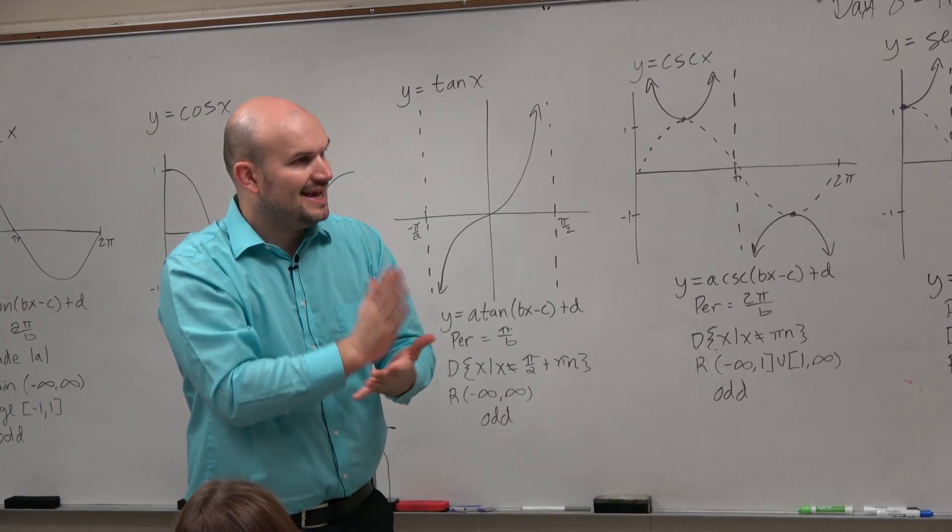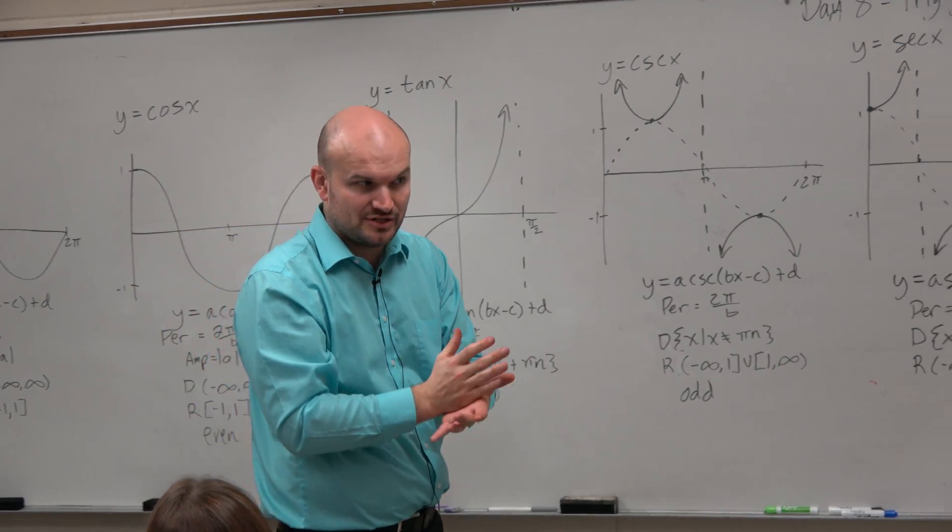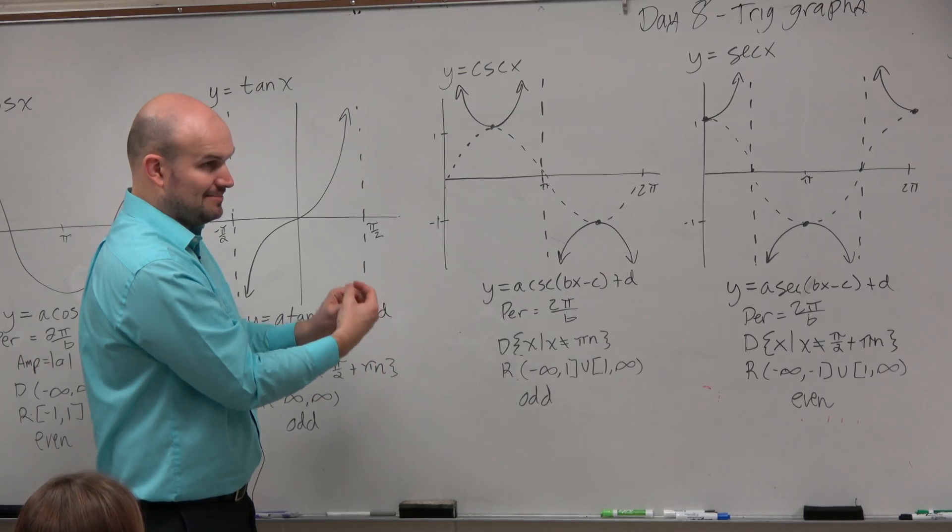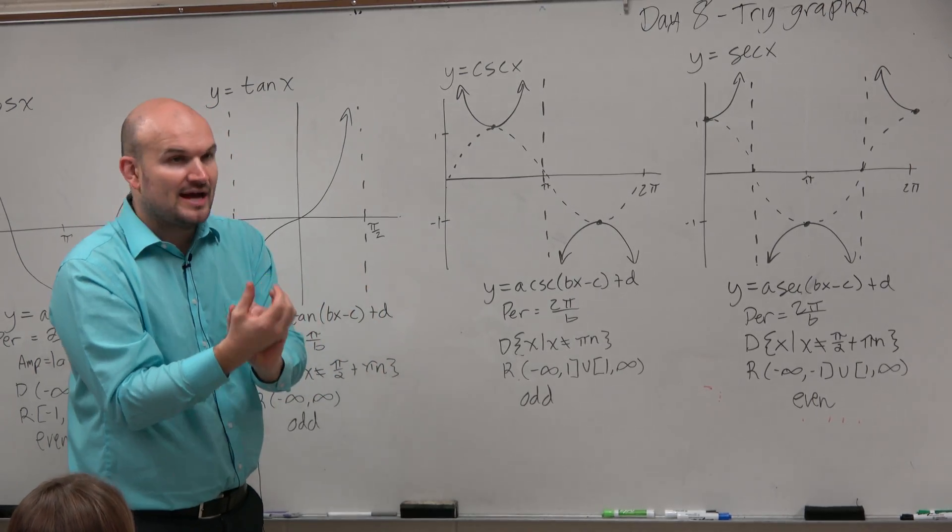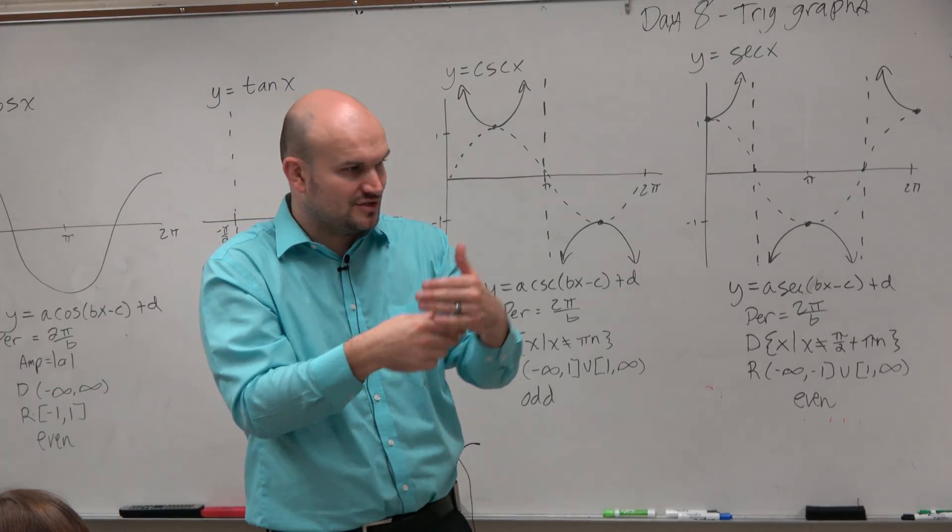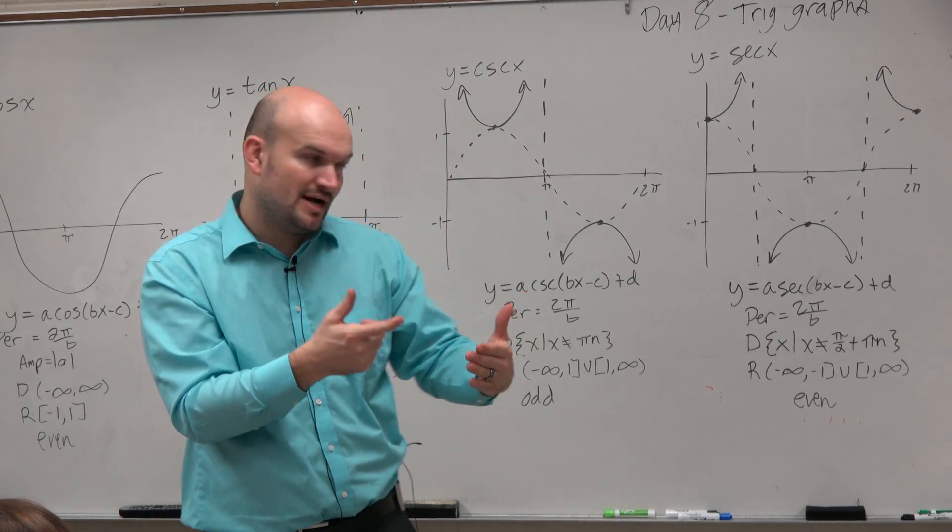Notice how a, b, c, and d are all in the exact same location, right? a and d are outside the function, and b and c are inside the function. That goes back to chapter one that we talked about, transformations of functions. Same thing. It was just a, b, h, and k, right?